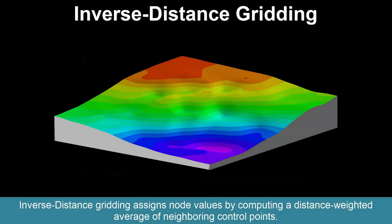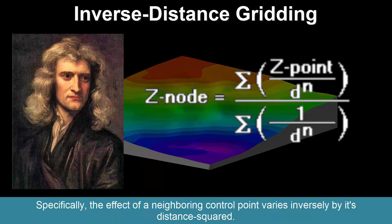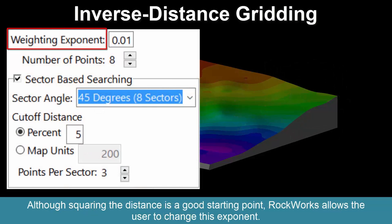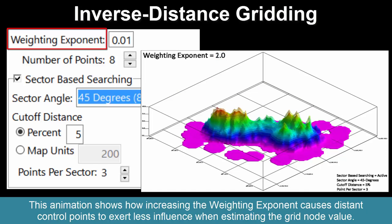Inverse distance gridding assigns node values by computing a distance-weighted average of neighboring control points. This algorithm is based on Newton's gravity equation — specifically, the effect of a neighboring control point varies inversely by its distance squared. Although squaring the distance is a good starting point, Rockworks allows the user to change this exponent. This animation shows how increasing the weighting exponent causes distant control points to exert less influence when estimating the grid node value.